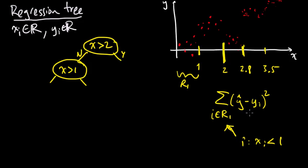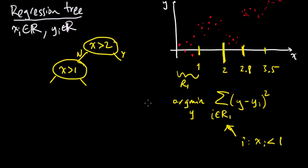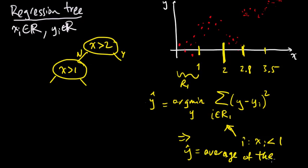We want to minimize this squared error, and it's pretty easy — if you just differentiate with respect to ŷ, set it equal to zero, and do the usual calculus thing, you can verify it's a minimum using the second derivative. What you end up with is that the argmin over ŷ implies that ŷ equals the average of the y_i's in region R1.